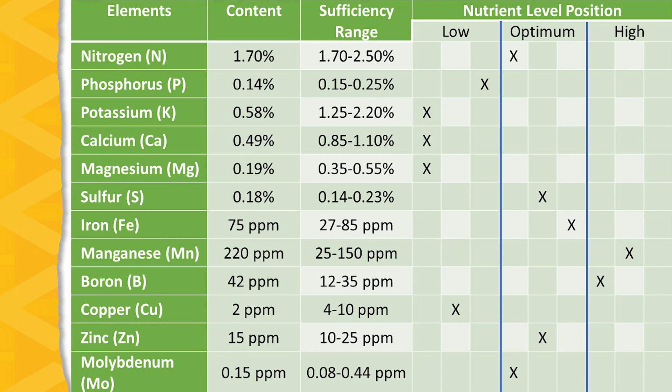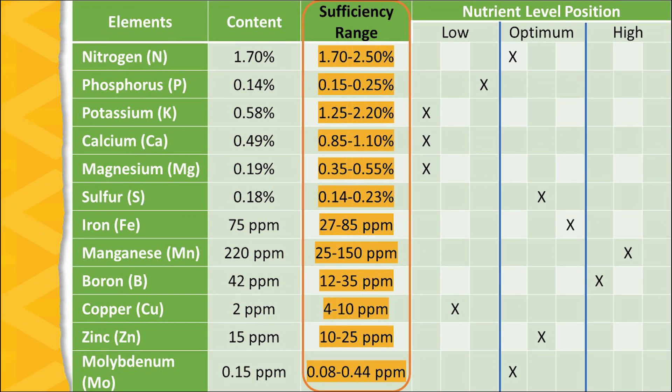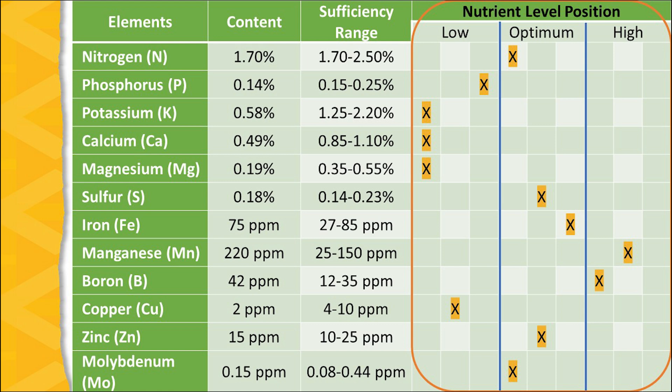Here is an example of a foliar test report as it returns from the analytical laboratory. There are three columns. One column is the actual nutrient content expressed as percentage in the case of nitrogen, phosphorus, potassium, calcium, magnesium, and sulfur, or in parts per million in the case of iron, manganese, boron, copper, zinc, and molybdenum. The actual content is then compared to the sufficiency range, which is the optimum level of leaf nutrient content arrived at through exhaustive research. A rating is then given as low, optimum, or high.